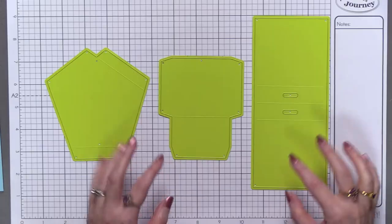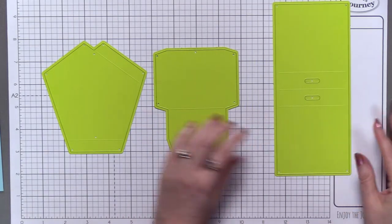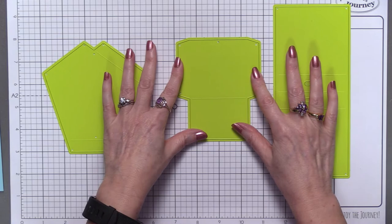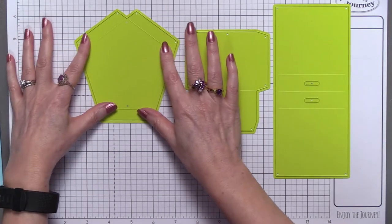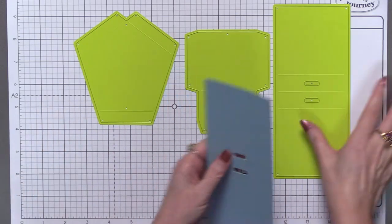Hi everyone, I'm Michelle Warner, concept designer with Funstampers Journey. Welcome to today's product spotlight video where I'm going to show you how to assemble our birdhouse box die. The die comes in three pieces: your roof panel, your sides and floor, and your front and back piece.